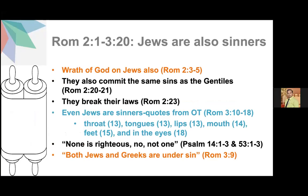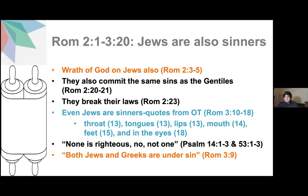Later on, from chapter 2 until 3:20, Paul shows how the Jewish people are also sinners. He says: you have the law, but you are not obeying the law. You are breaking the law and because of this you have sins. He is even quoting Old Testament codes to identify that sin is in your flesh, in your body — in throat, tongues, lips, mouths, feet, and eyes. So he is quoting the Old Testament to identify that Jewish people are also sinners, quoting Psalm 14 and Psalm 53, saying none is righteous, not one.